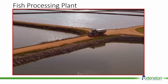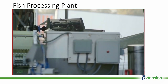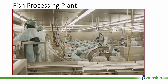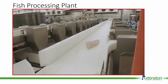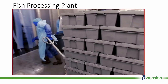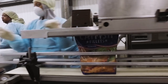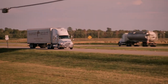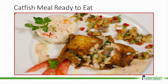Once the fish arrive at the processing plant, they're unloaded, weighed, sorted, and processed into a variety of product forms. Some of the fish is shipped out fresh, but the majority is individually quick frozen, weighed, and packaged for easy transport to distributors, restaurants, and seafood retailers. The entire process can take as little as 45 minutes. And eventually, the catfish makes its way to your plate in a lovely dish like this.